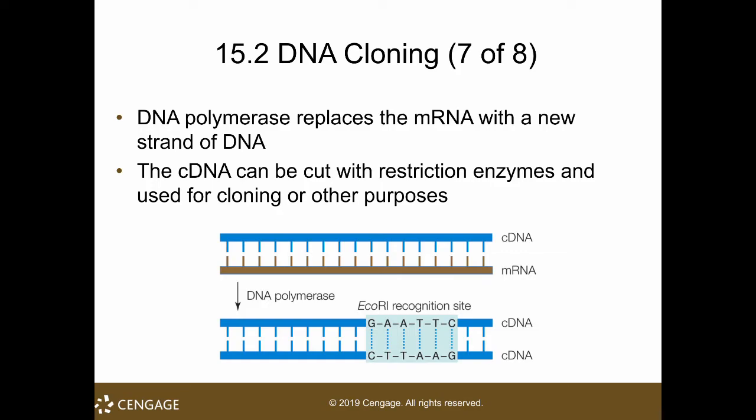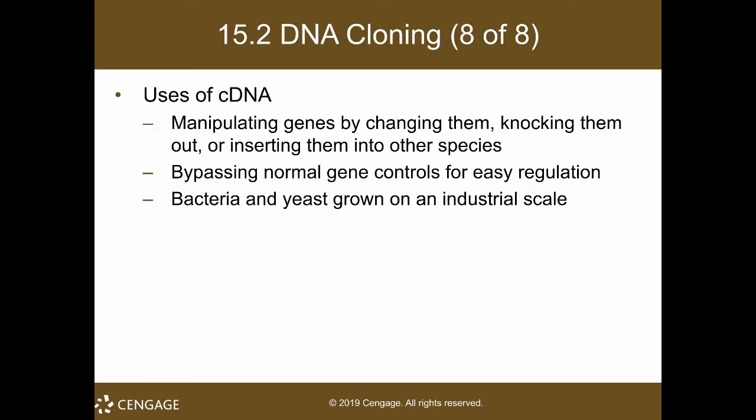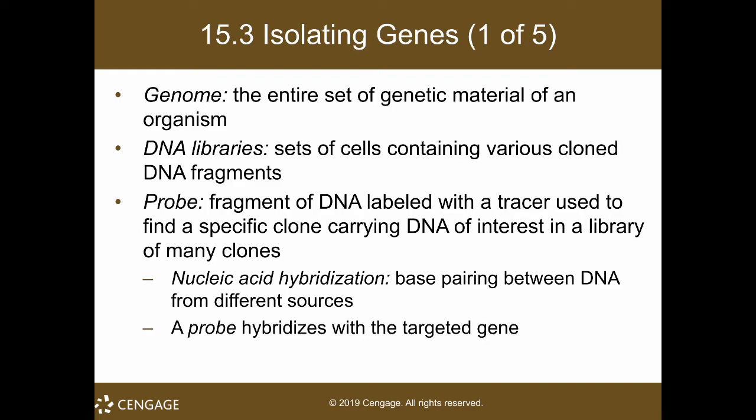That is how you use and express a eukaryotic gene in a prokaryotic system. Some uses of cDNA include manipulating genes — changing them, knocking them out, inserting them into other species, or simply studying them. Because these genes are already processed and ready-made, they allow you to bypass normal gene controls and are easy to regulate. Most importantly, you can insert genes from a complex eukaryotic organism into a simpler organism like bacteria. Bacterial cells are easier to grow, and you can achieve industrial-scale production using cDNA.